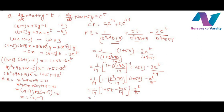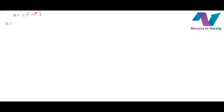Therefore x equals CF plus PI: x equals C1·e^(minus 2t) + C2·e^(minus 7t) + 1/14 + (5/14)t minus 9/14 minus e^t/8. This is the complete value of x.